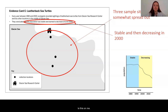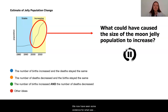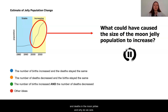What does this all mean? What could have caused the size of the moon jelly population to increase? We now have seen some evidence for what was occurring to the zooplankton and the sea turtles during this time. How does this help us? How does this information relate to the number of births and deaths in the moon jellies, and why do we care?